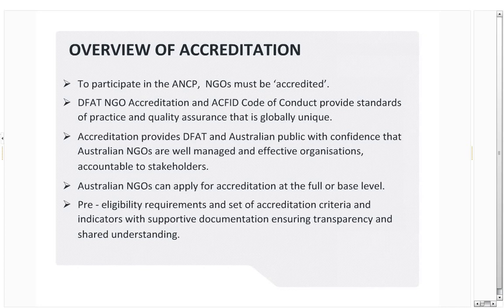There are two levels of accreditation NGOs can apply for: base and full. Those applying for full will be required to respond to additional indicators, and there is also a funding difference. Base level will give the NGO an annual grant of $150,000 per year. Full is a minimum of $300,000 plus a proportion of the remaining ANCP funds based on something called RDE — recognised development expenditure — which is basically funds raised in Australia by the Australian public and spent overseas on development activities. All the information on this is available on the ANCP webpage at the DFAT website, and there was recently a webinar on this topic now available on ACFID's YouTube channel.